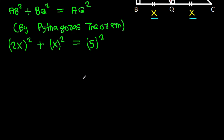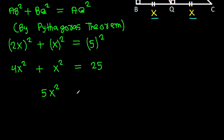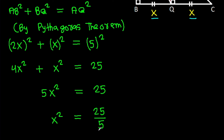So 4X squared plus X squared equals 25. And 5X squared equals 25. So X squared equals 25 over 5, which gives us X squared equals 5.